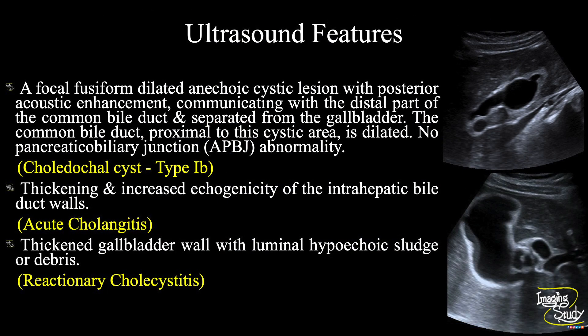In summary, a focal fusiform dilated anechoic cystic lesion with posterior acoustic enhancement communicating with the distal part of the common bile duct and separated from the gallbladder is noted. The common bile duct proximal to this cystic area is also dilated. There is no pancreaticobiliary junction abnormality, so these features suggest a case of choledocal cyst of type 1b. There is also thickening and increased echogenicity of the intrahepatic bile duct walls, which goes in favour of acute cholangitis. There is also a reactionary thickened gallbladder wall with luminal hypoechoic sludge or debris indicating reactionary cholecystitis.